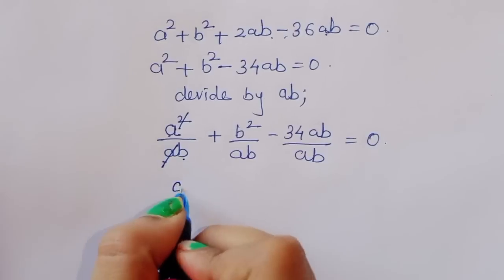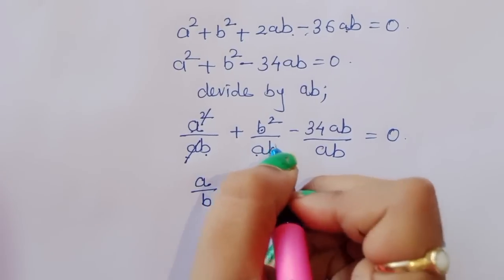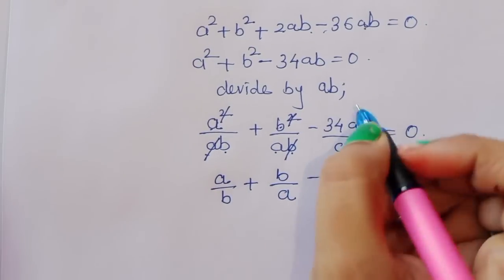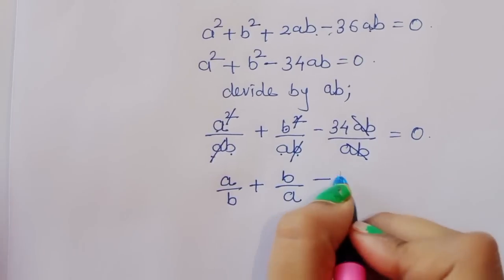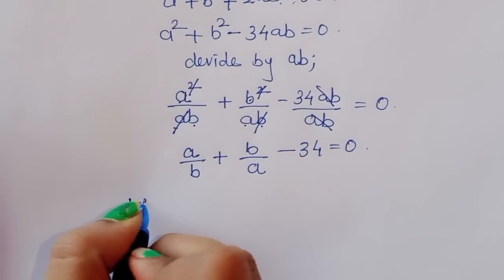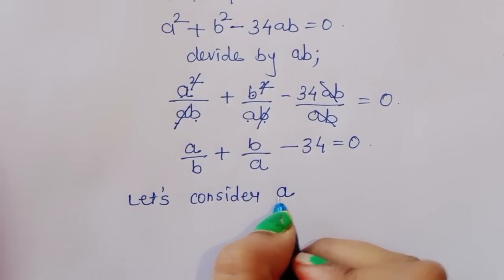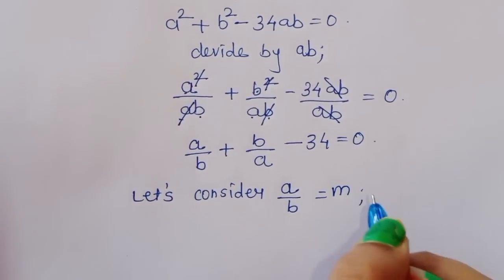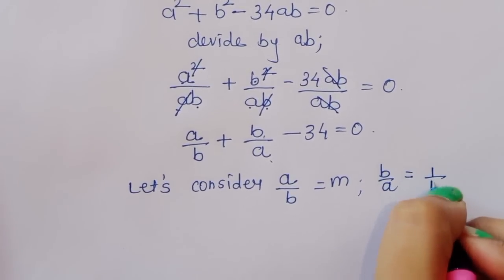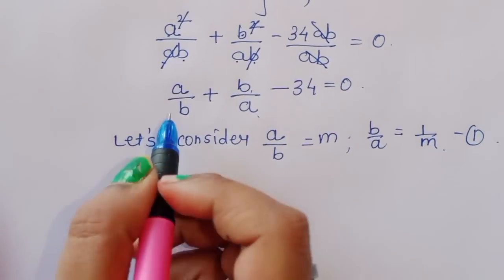Dividing by ab, we get: a squared divided by ab, plus b squared divided by ab, minus 34ab divided by ab is equal to 0. Now let's consider a substitution: let a upon b equal to m, and b upon a equal to 1 upon m.